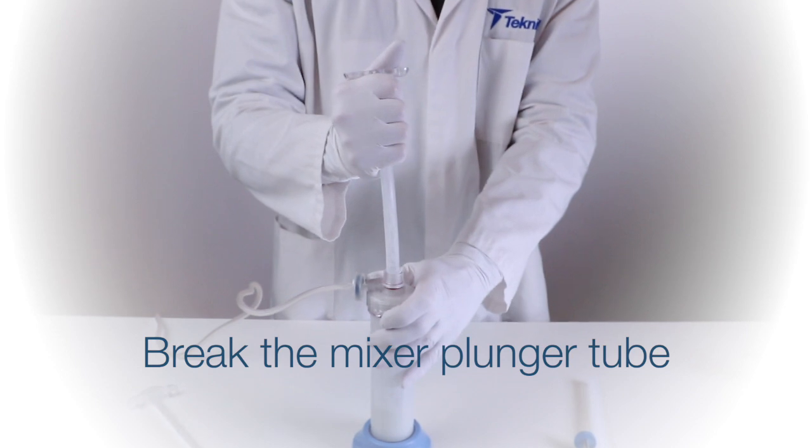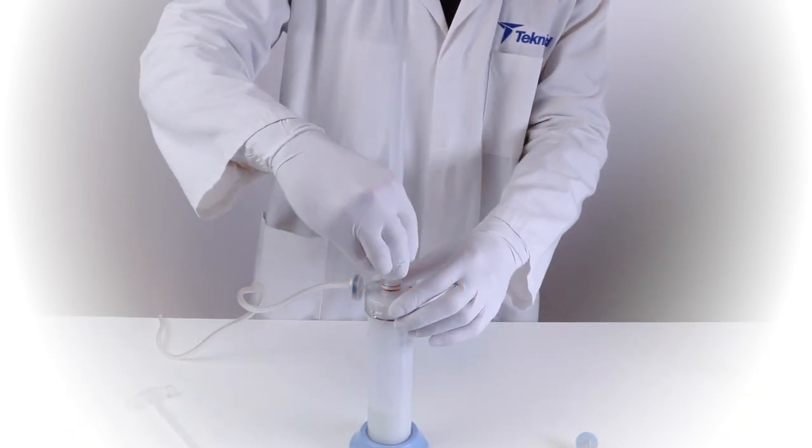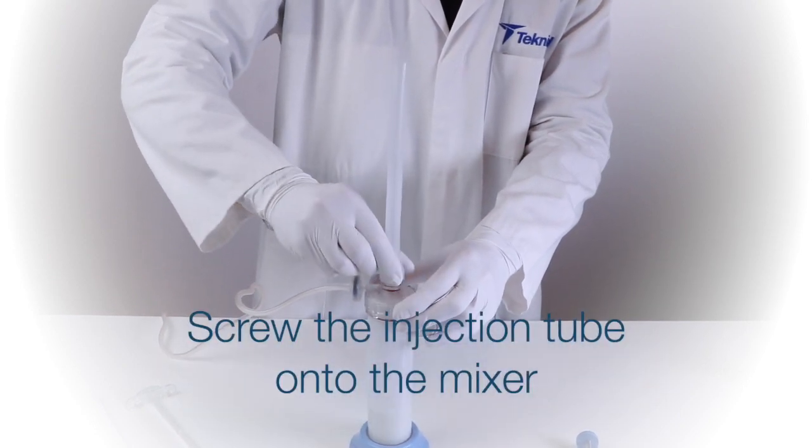Break the mixer plunger tube. Caution: the tube must be fully pulled up to be properly broken in two. Screw the injection tube onto the mixer.